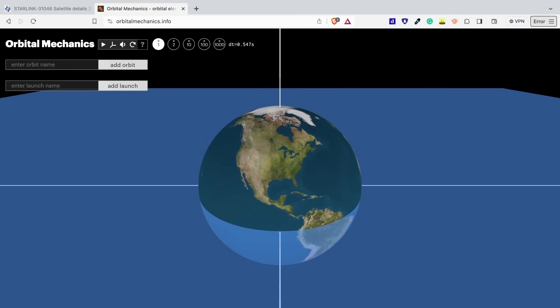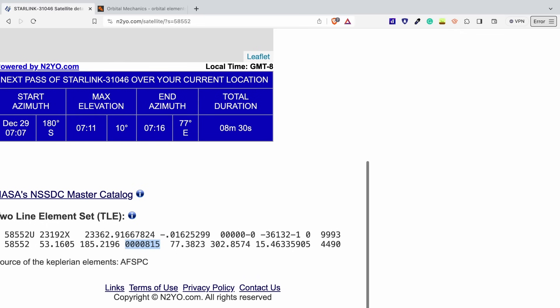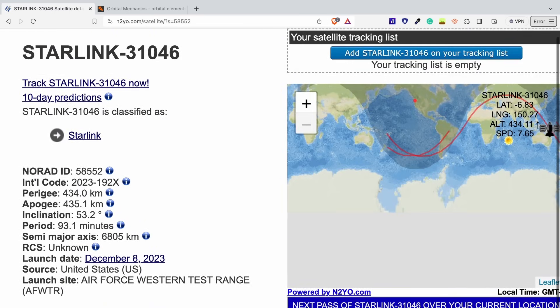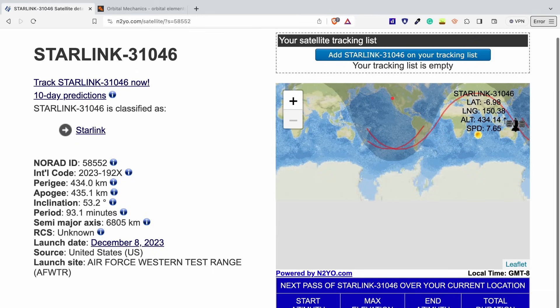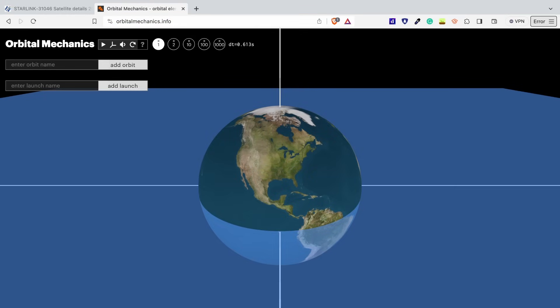The Keplerian elements are really helpful for understanding where a satellite is oriented within space, but they can be tricky to understand. Fortunately, there's a great online tool that lets you visualize Keplerian elements, called Orbital Mechanics. On orbitalmechanics.info, we can use the Keplerian elements extracted from N2YO in order to plot the orbit of the Starlink satellite. To do this, we're going to create an orbit, so I'm going to name it after the Starlink satellite name, paste that into this input box, and click Add Orbit.